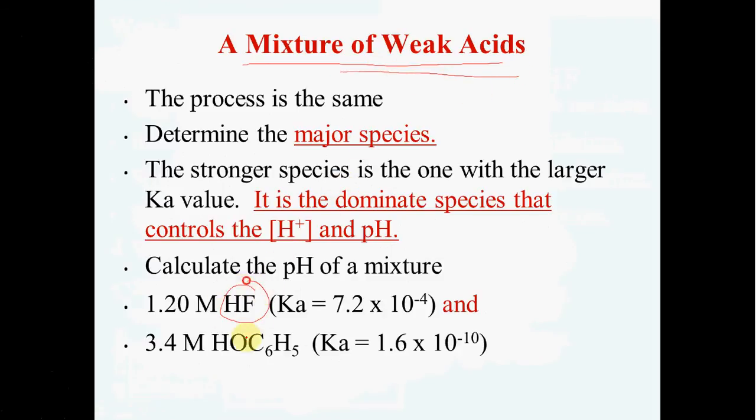When you have a mixture of weak acids, it seems like a very complicated problem. If you had HF and HOC6H5, you might think that you would need to find the hydronium ion for each substance, and then add them up and average them. But in fact, you don't. In any mixture of acids, one of those acids will be dominant. And the dominant acid will be the one with the larger Ka value. So it will only be necessary to find the hydronium ion for this reaction. This one will not contribute enough hydrogen ion to be significant.